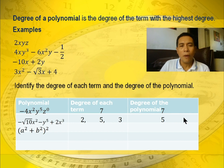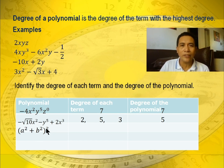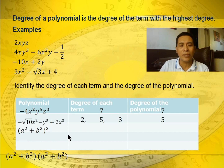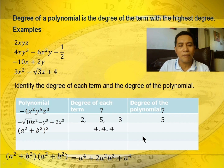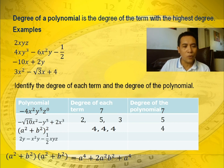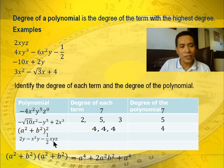Third example: a squared plus b squared raised to 2. Here a squared plus b squared is the base and the exponent is 2, meaning we multiply it by itself. Expanding gives a to the fourth plus 2a squared b squared plus b to the fourth — a trinomial. Each term has degree 4, so the degree of the polynomial is 4. Fourth: 2y minus x squared y minus 1 half xyz — a trinomial. Degrees are 1, 3, and 3, so the degree of the polynomial is 3.